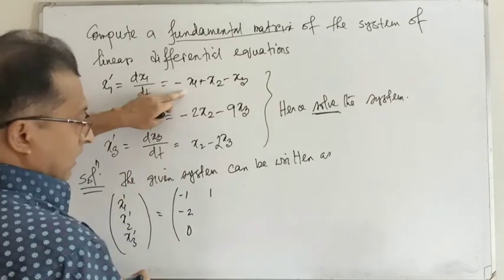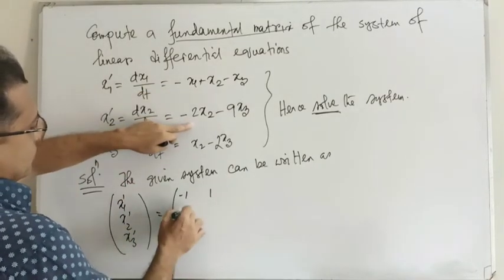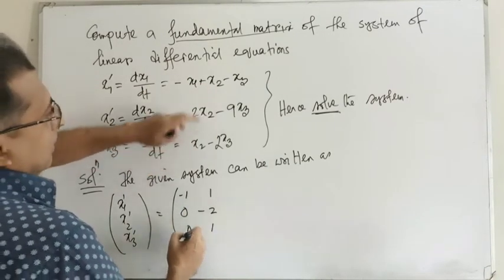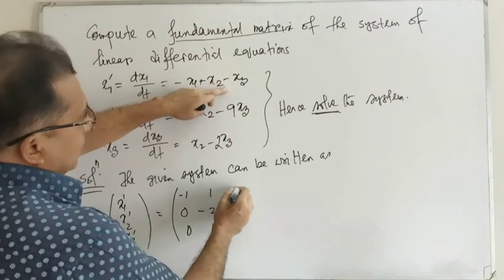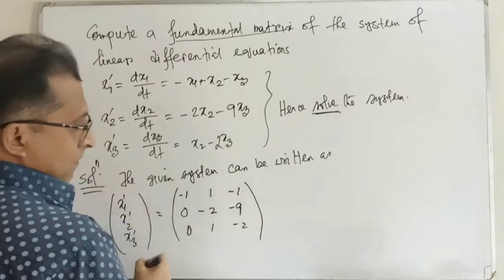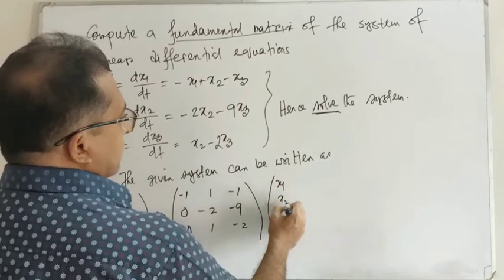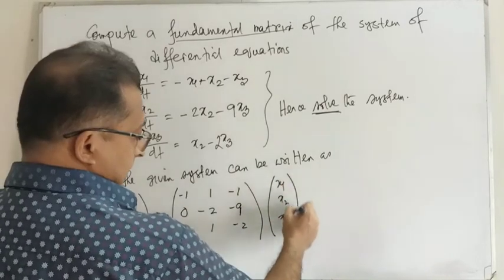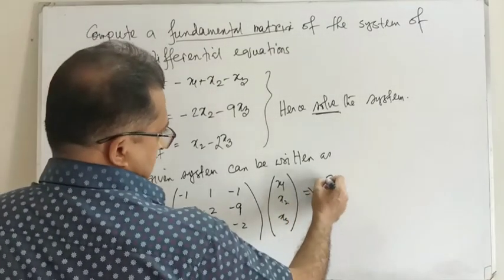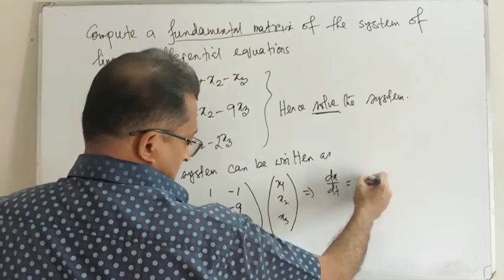And x1 is also 0 because there is no x1. Then 1, minus 2, then 1, and minus 1, minus 9, minus 2, into x1, x2, x3. That means we can write down the system as dx/dt equals to Ax.